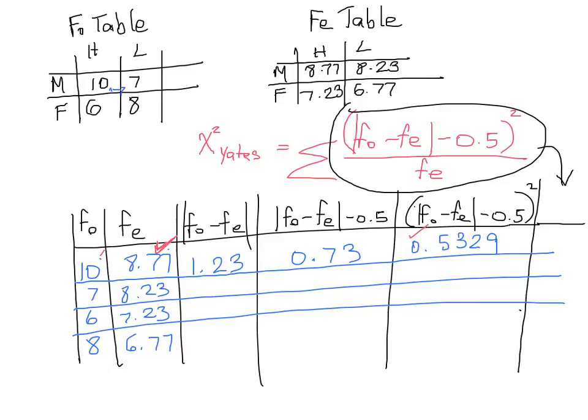And we then divide this value by this fe value. So we're not dividing by the sum of fe, we're dividing by the respective expected frequency value in that row. So when we do that, we should get 0.0608.